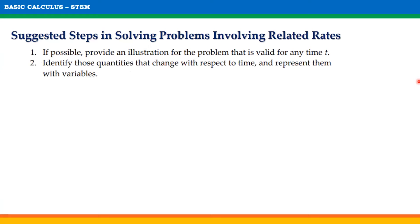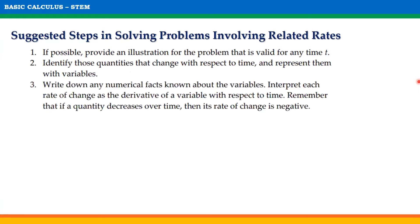Next step, identify those quantities that change with respect to time and represent them with variables. Step 3: Write down any numerical facts known about the variables. Interpret each rate of change as the derivative of a variable with respect to time. Remember that if a quantity decreases over time, then its rate of change is negative.